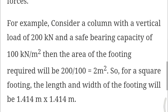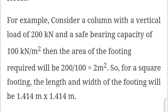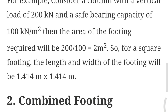For example, considering a column with a vertical load of 200 kN and a soil bearing capacity of 100 kN per meter square, the area of footing required will be 200 divided by 100, equal to 2 meter square. For square footing, the length and width will be 1.414 m × 1.414 m. Alternatively, we can use 1 m × 2 m, which also gives 2 meter square. That is the main difference between square footing and rectangular footing.